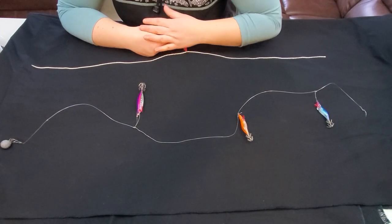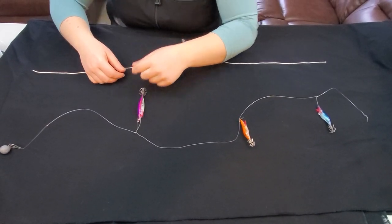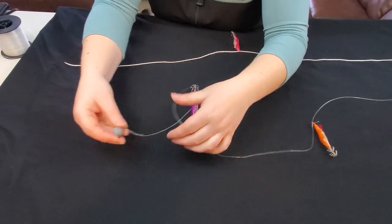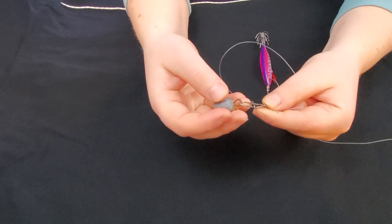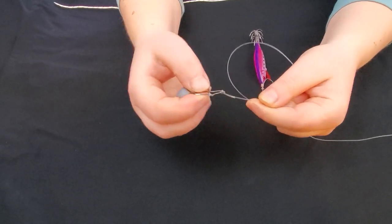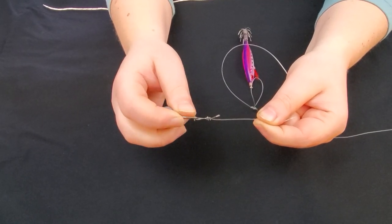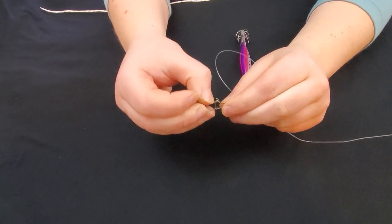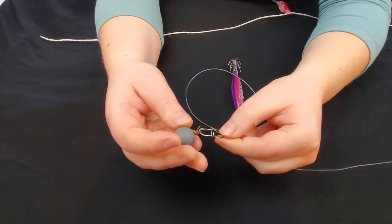For my leader, I use 50-pound test monofilament. At the bottom, I have a ball weight attached to a snap, and the snap is attached to the line with an improved clinch knot. I like having the snap at the bottom so I can switch out the weight for heavier weights if I need to.